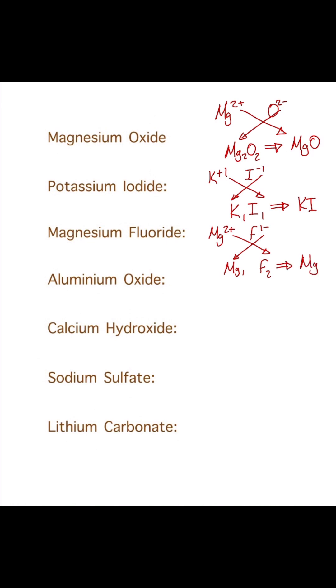Now for aluminium oxide. Aluminium is in group three, so that's Al3 plus. Oxygen is in group six, giving us O2 minus. Swapping those around gives us Al2O3. So those are all examples with elements.